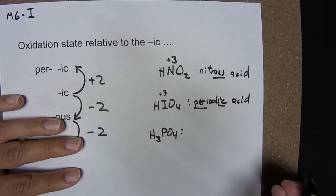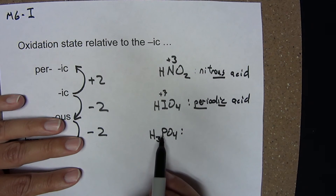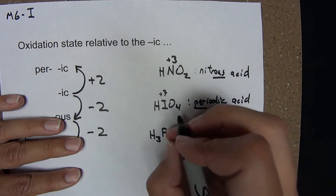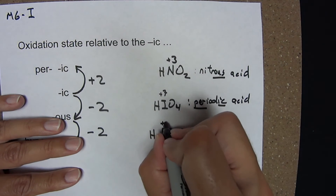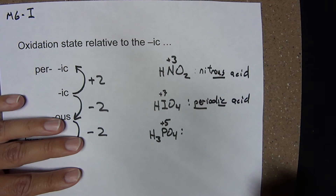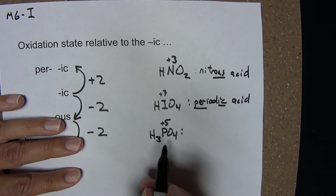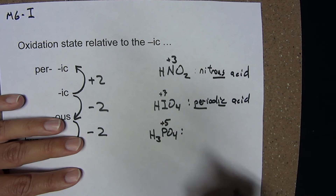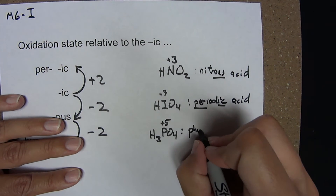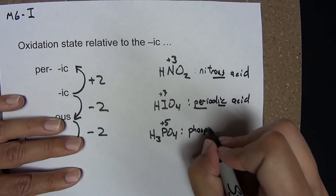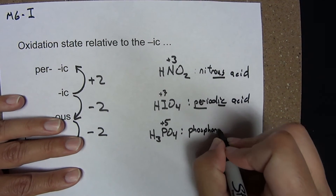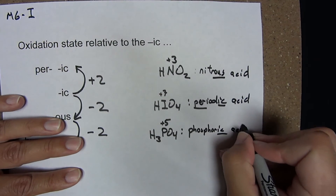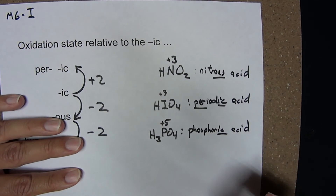Next: H3PO4. We identify the oxidation state of phosphorus, which is plus 5. Phosphorus is in group 5 on the periodic table, which makes this the ic acid. This is phosphoric acid.